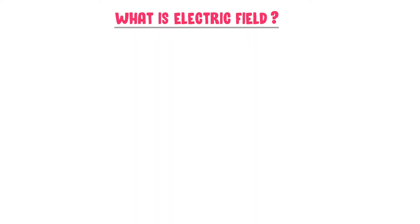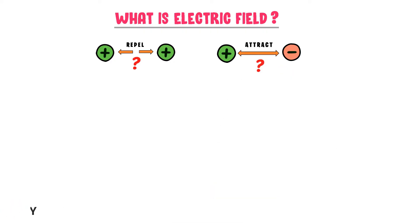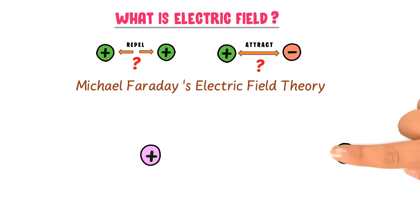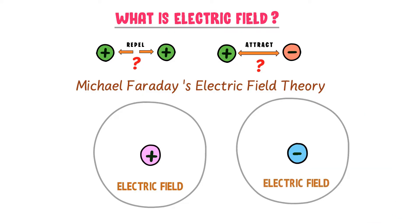Now what is electric field? We know that like charges repel and unlike charges attract. But how do like charges repel and unlike charges attract? It was Michael Faraday who first put forward the theory of electric field. Now let's consider two large charges, positive and negative. According to Faraday, there is an electric field around the positive charge and also an electric field around the negative charge.